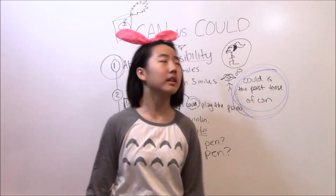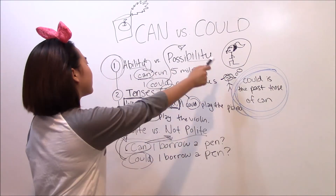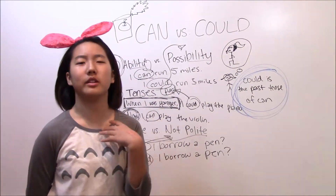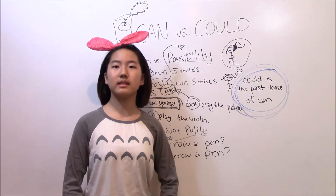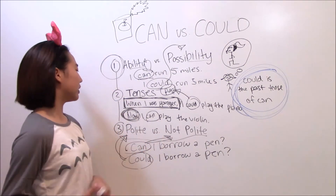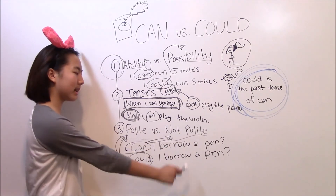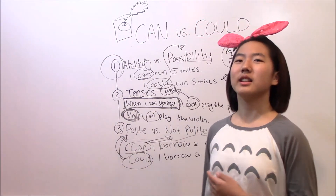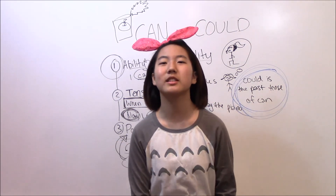And now let's have a small review. Can. Could. The first difference is ability versus possibility: 'I can run five miles' is your ability — you know for sure. 'I could run five miles' is a possibility — you just think it, though you're not sure. Next is tenses: 'When I was younger, I couldn't play the piano' — could is past tense. 'Now I can play the violin' — can is present tense. And lastly, polite versus not polite: 'Can I borrow a pen?' you'd say to friends or siblings, but not teachers, because it is less polite. 'Could I borrow a pen?' is polite — you'd say that to teachers, parents, grandparents, or your elders. People you should respect. Thank you guys so much for watching. Remember to like and subscribe. Bye!